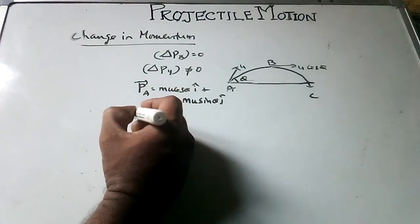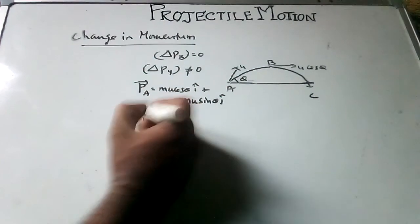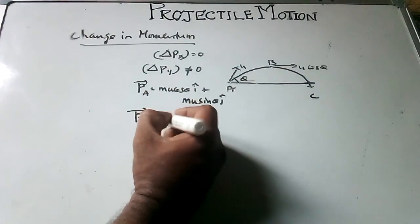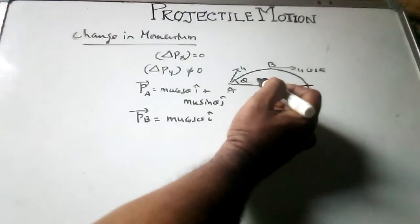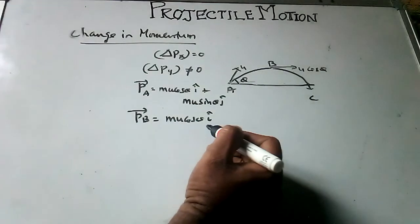And at B, momentum at B, Pb equal to mu cos theta i cap only, because there is no vertical component. That is why mu cos theta i cap.